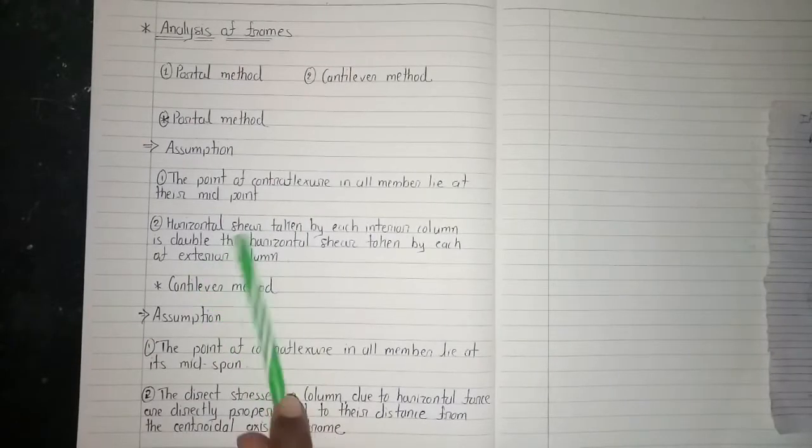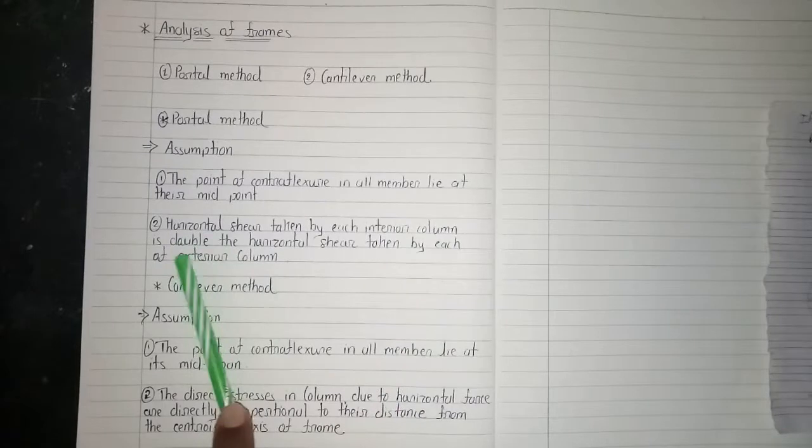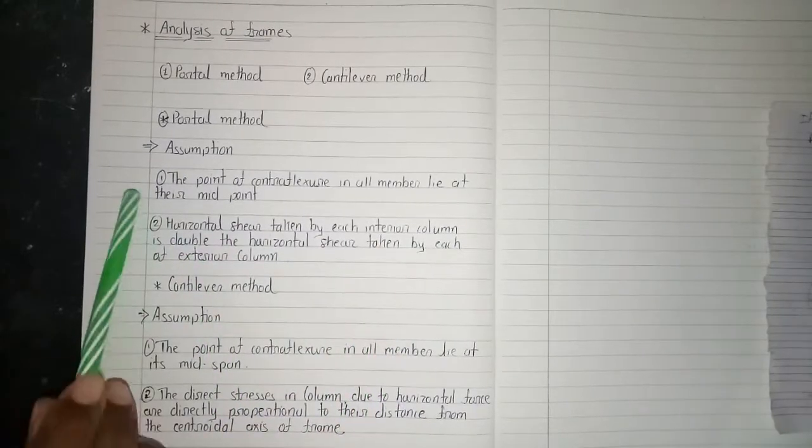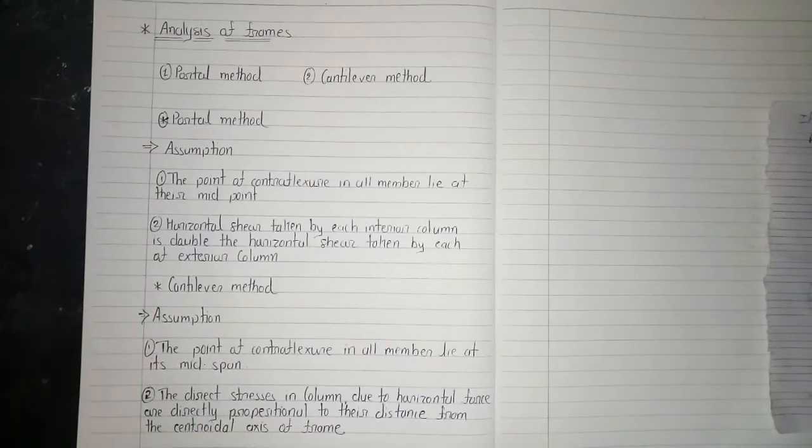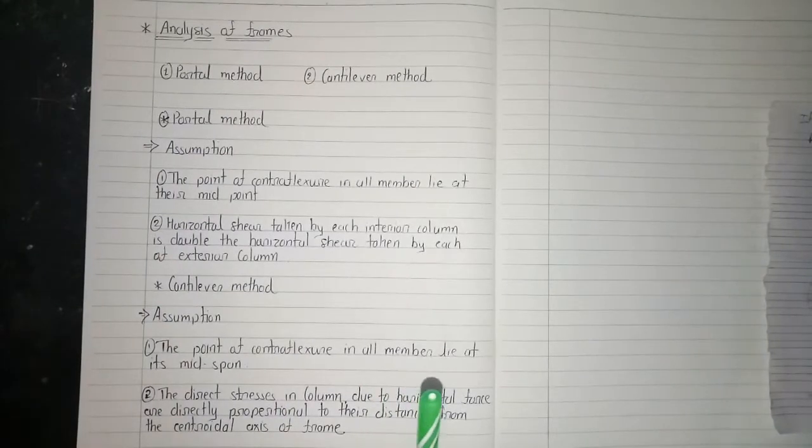Second assumption: the horizontal shear taken by each interior column is double the horizontal shear taken by each of the exterior columns. How these assumptions are applied while solving the analysis of frames we see later in our questions.